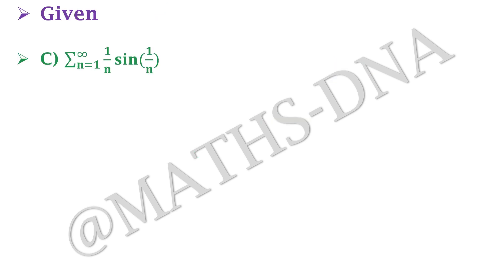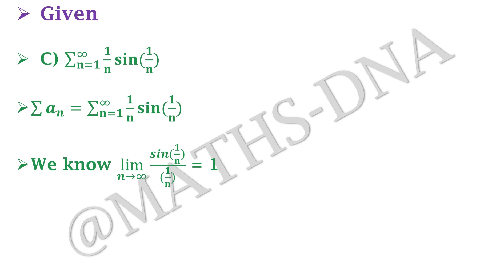Now for option (c): summation n from 1 to infinity of (1/n)·sin(1/n) — whether this is convergent or divergent. We know that limit n→∞ of sin(1/n)/(1/n) = 1. So if we can get bₙ to give us 1/n in the denominator, we can get a finite nonzero limit.